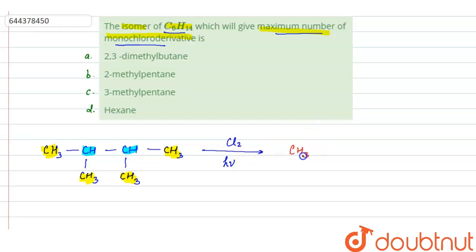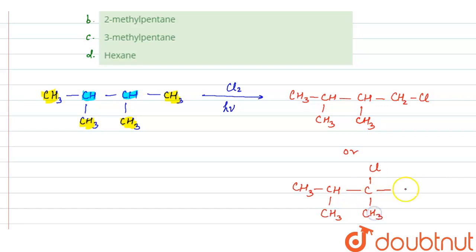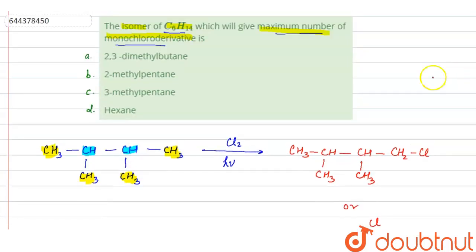One possible product has CH2Cl at the terminal carbon, and the other possible product has CHCl at the secondary carbon. These are the two possible products because this molecule has only two types of different carbons. So here we get two monochloro derivatives.